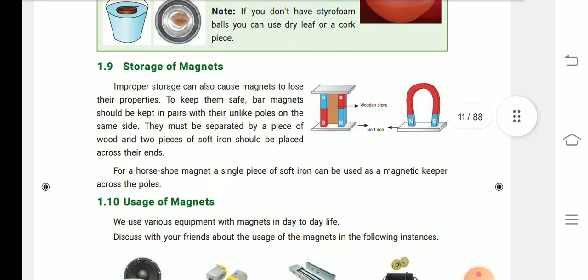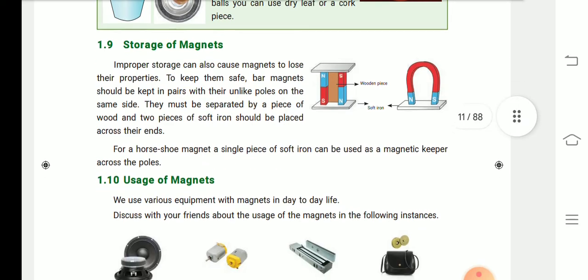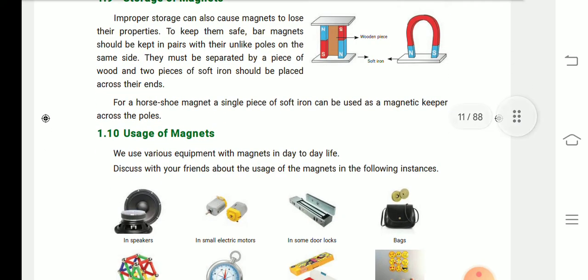Next one, storage of magnets. How will we store the magnets? Improper storage can also cause magnets to lose their properties. To keep them safe, bar magnets should be kept in pairs with their unlike poles on the same side. They must be separated by a piece of wood, and two pieces of soft iron should be placed across their ends.